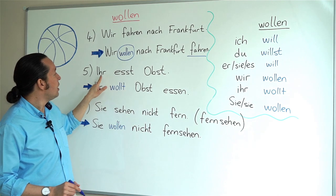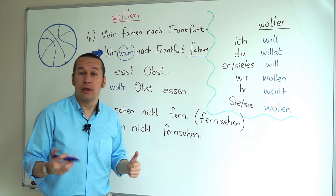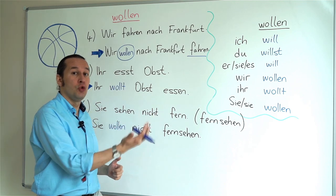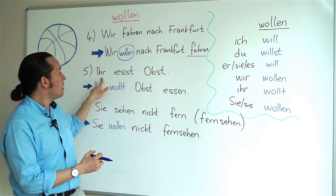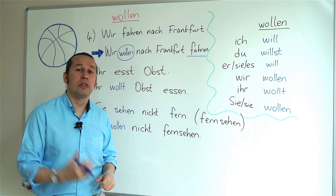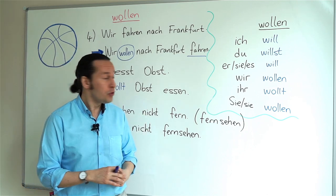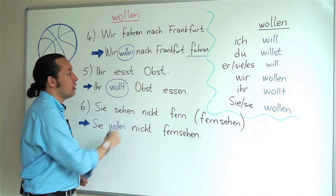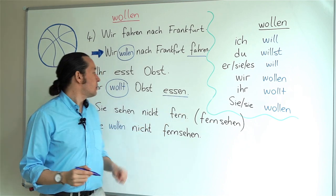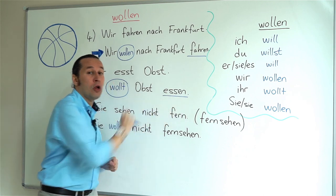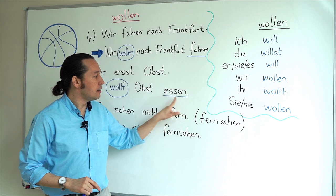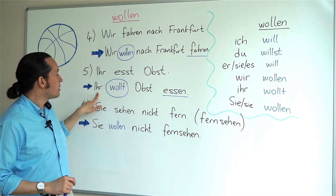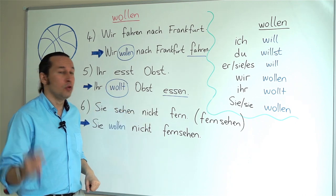In the next example: ihr esst Obst. Essen stands for to eat. Obst means fruit. If I say to a group of people 'you eat fruit,' I'll say ihr esst Obst. What do I do if I want to say 'you want to eat fruit'? Ihr wollt — it is conjugated as ihr wollt. So I'll say: ihr wollt Obst essen. The main verb essen always stays in the infinitive form, and the conjugation takes place in the modal verb wollen.